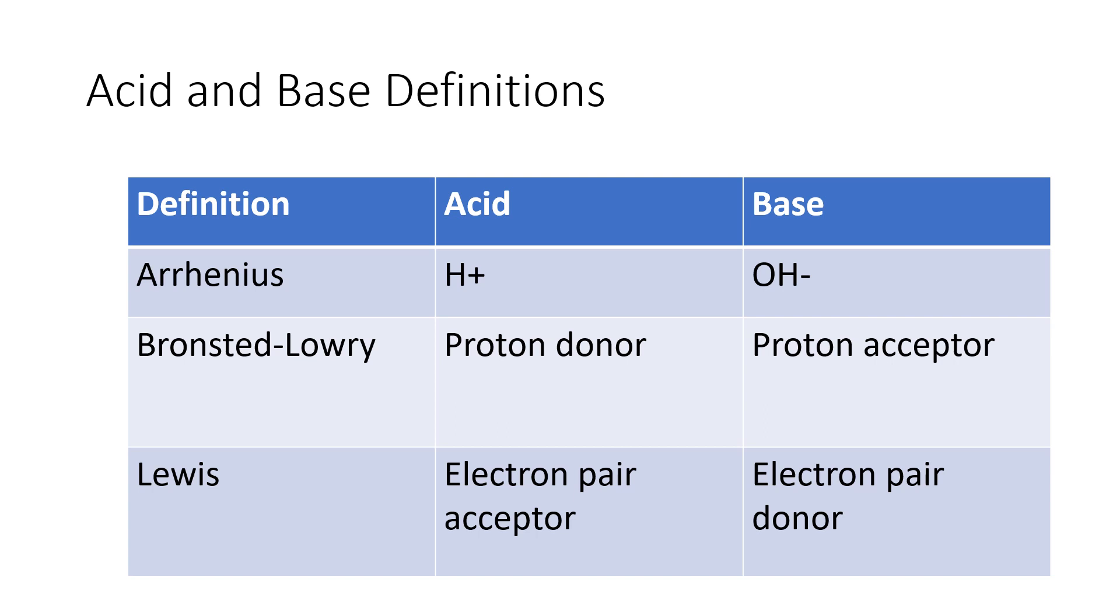These three definitions are shown so you can compare and contrast them in this table. The first column shows the three different definitions, the second column is what an acid is according to those definitions, and the third column shows what's a base. For instance, in the Arrhenius definition, an acid is a substance that releases H+ ions in water, and a base is a substance that releases OH- ions in water.